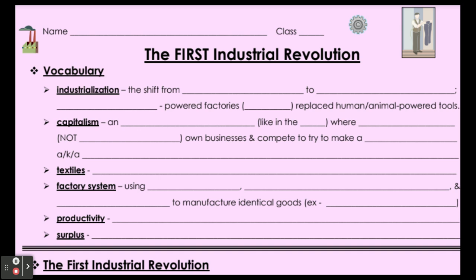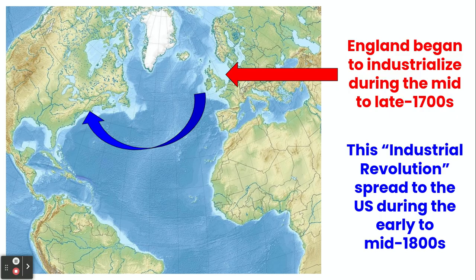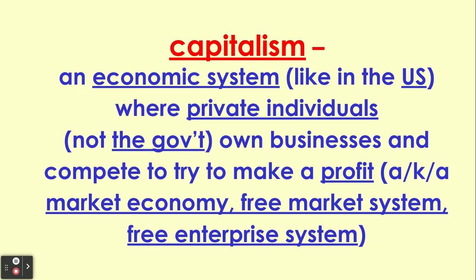Capitalism is the economic system, the way the United States is organized. Capitalism is an economic system, like what we have in the U.S., where private individuals — remember joint stock companies — own businesses and compete to try to make a profit, not the government. Another name for that is a market economy, free market system, or free enterprise system. These are words you should be familiar with living in the United States.